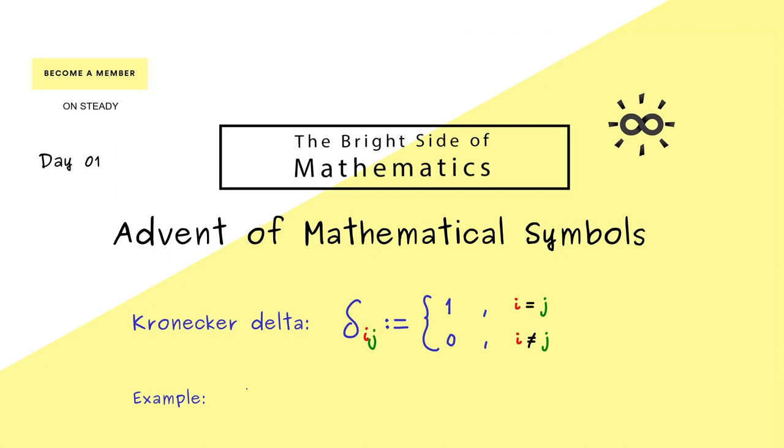For example when you write delta 1 2 it just stands for the number 0. On the other hand delta 5 5 stands for the number 1. So you see the Kronecker delta is a very simple symbol.